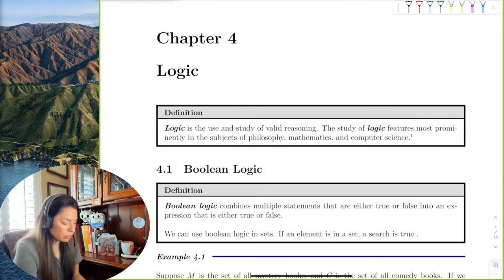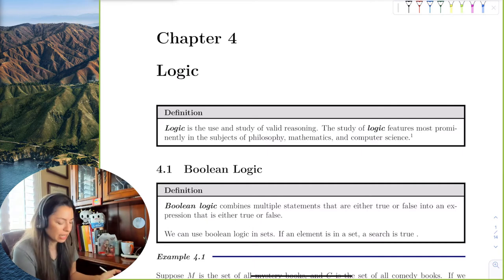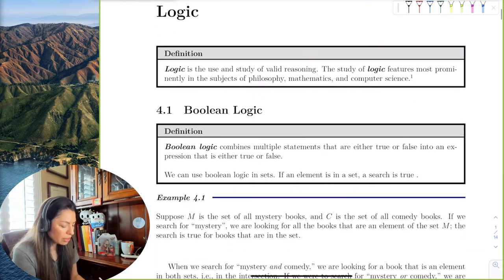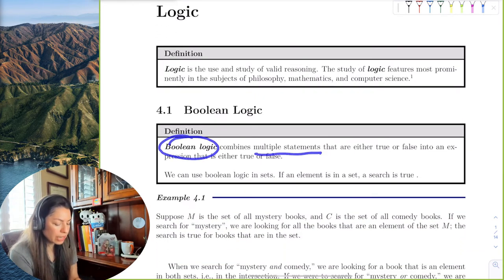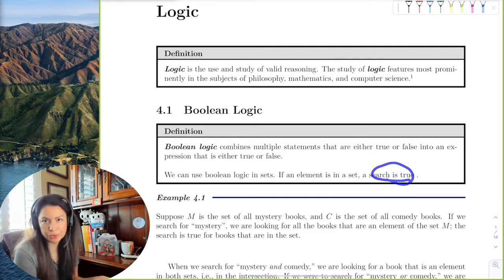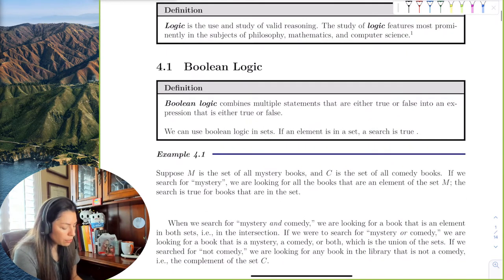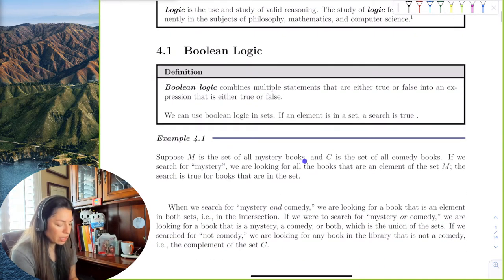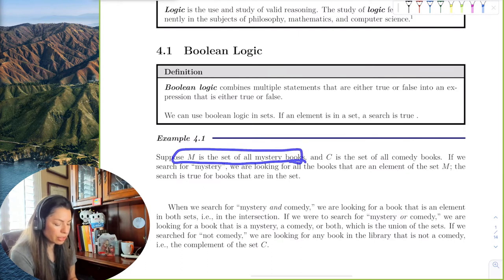The first topic of logic we're going to do is Boolean, which is usually the most obvious logic to us, even though we don't always say it. Boolean logic combines multiple statements that are either true or false into an expression that is either true or false. We can use Boolean logic in sets. If an element is in a set, the search is true.